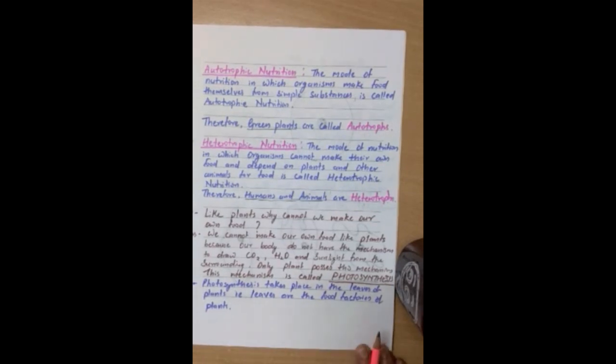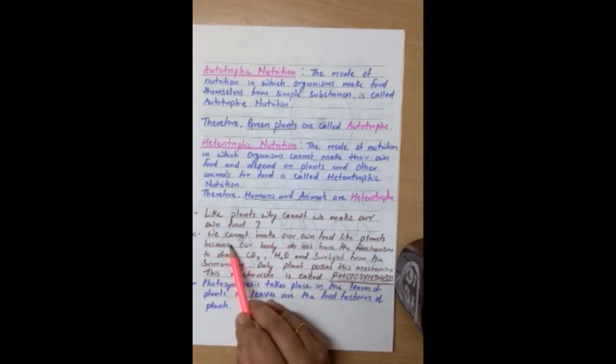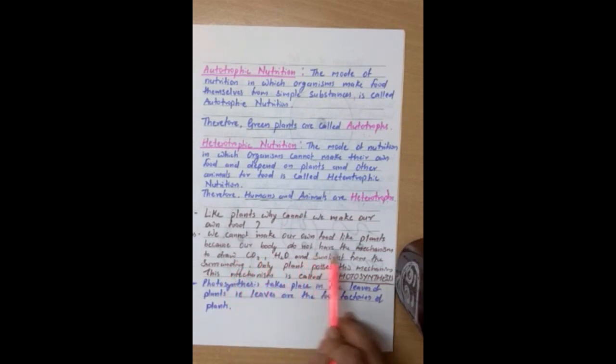Likewise, one more question may arise in your mind. Like plant, why cannot we make our own food? We cannot make our own food like plants because our body do not have the mechanism to draw carbon dioxide, water and sunlight from the surrounding. Only plant possesses this mechanism and this mechanism is called as photosynthesis. We do not have the capability of drawing carbon dioxide from the atmosphere. Rather, carbon dioxide is a pollutant to us. Similarly, we cannot draw water and mineral from the soil. We have to drink water. And can we sit in the sunlight for a long time? No, not possible. So, our body do not have the mechanism to perform photosynthesis.